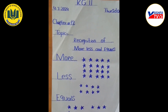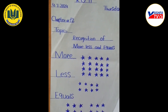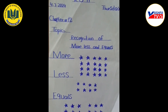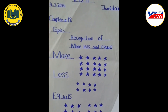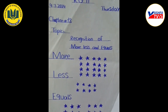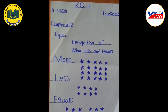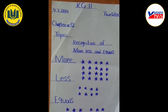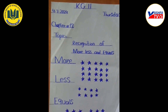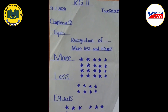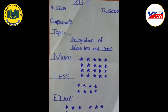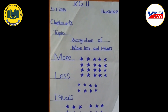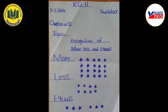آج کا ہمارا چیپٹر ہے چیپٹر نمبر 12۔ My dear students, open your math books at page number 12, KG2 class. آج ہم چیپٹر نمبر 12 میں more, less, and equals کے بارے میں سیکھیں گے، جبکہ چیپٹر نمبر 11 میں ہم نے some and all کے بارے میں سیکھا تھا۔